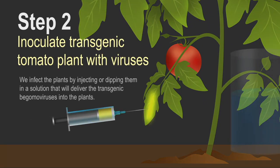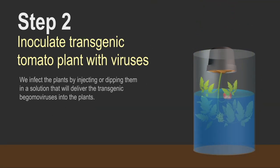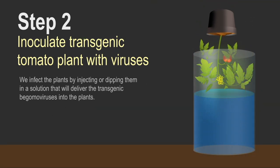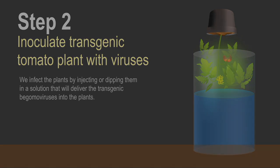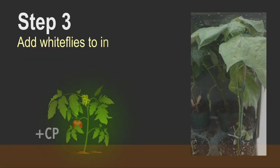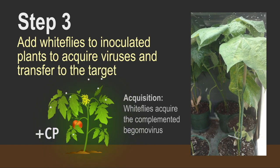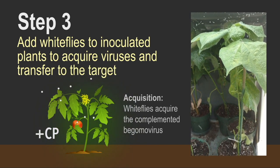We then inoculate the transgenic tomato with that virus which can be done either by injection or by infiltration, and under these circumstances now the co-protein will allow that to amplify.